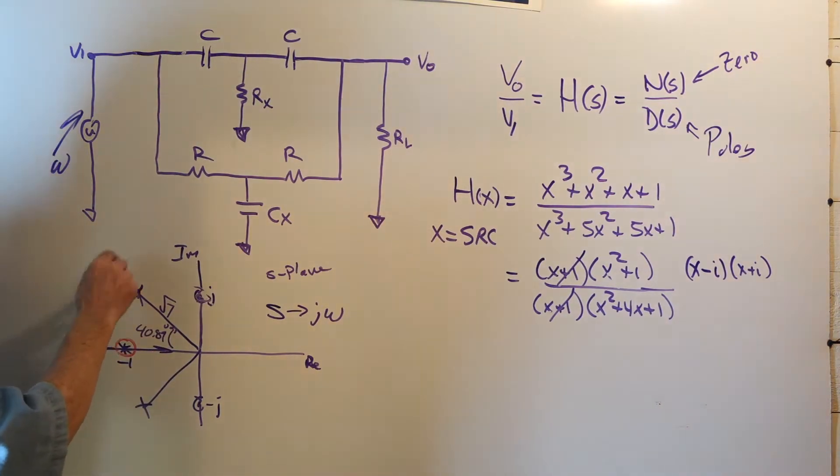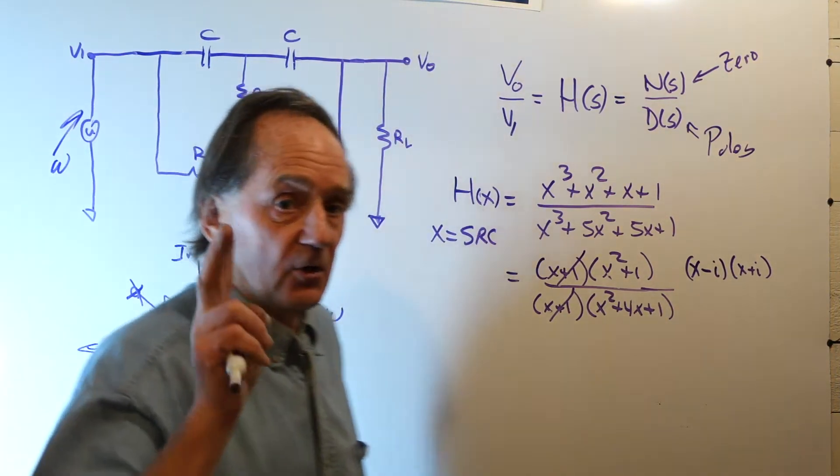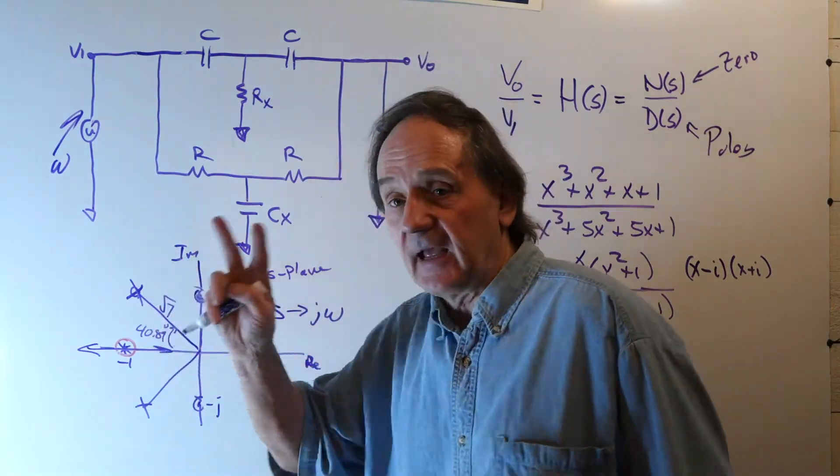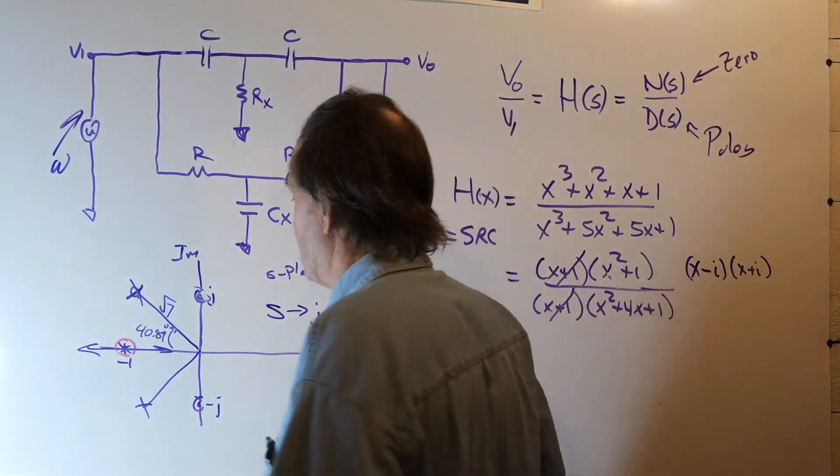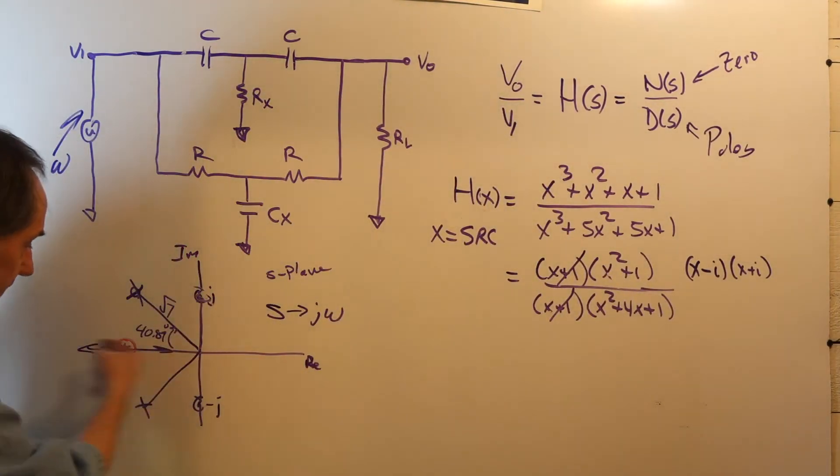This single pole has to move along the negative real axis. It can't go up into the plane. Any poles that move off into the plane have to occur in pairs, and this does not have a pair, so it has to lie along the negative real axis. So, it only goes back and forth here.